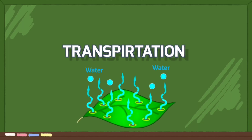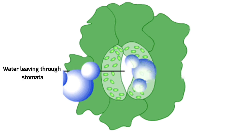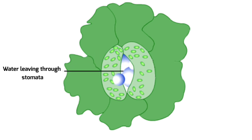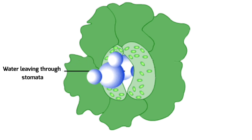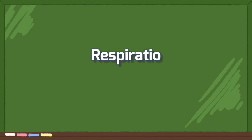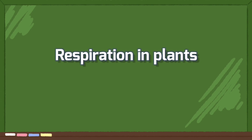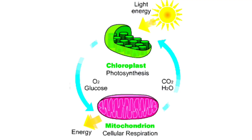Transpiration is the process where water is lost from the plant, mainly through the stomata. This process helps with nutrient uptake and cooling the plant. Plants also need energy, which they get through respiration.